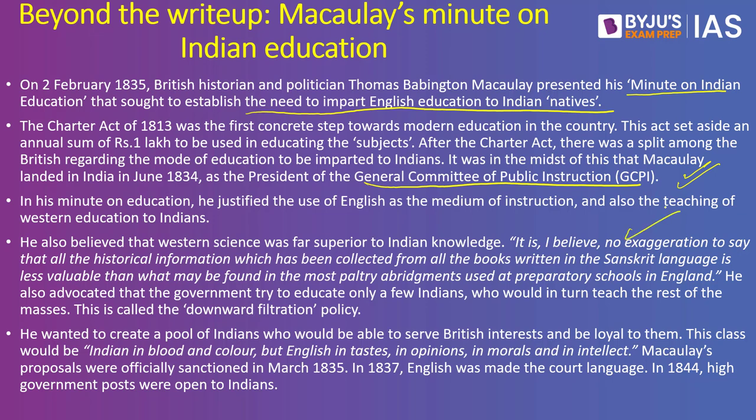Macaulay had famously written that all the books written in Sanskrit collectively are less valuable than what may be found in the most basic preparatory school book in England. He despised Indian culture and local tradition so much that he said all knowledge available in Sanskrit is not equal to a single standard English book. That is why Macaulay is seen as a villain in the context of the Indian education system. He also suggested the Downward Filtration Policy — the idea that the government should educate only a few people at the top, who would then pass that education down to lower levels.